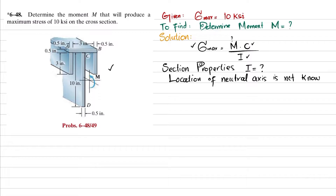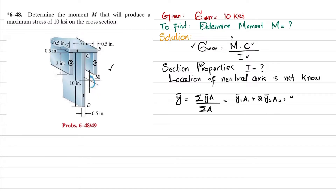We will find the neutral axis location using the formula: ȳ = Σ(y'·A) / ΣA. The beam is made up of three elements — element 1, element 2 (appearing twice due to symmetry), and element 3. So the formula becomes: (y1'·A1 + 2·y2'·A2 + y3'·A3) / (A1 + 2·A2 + A3). We will find each term one by one.